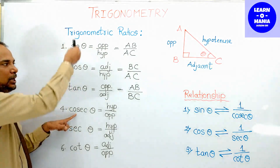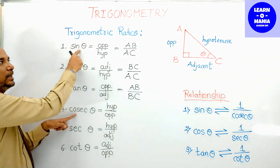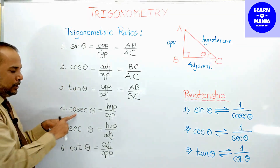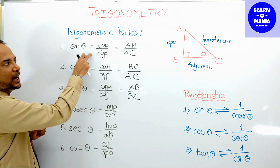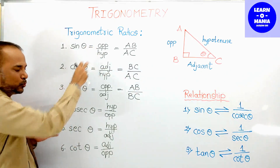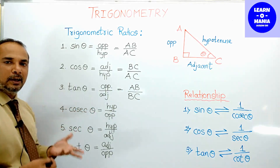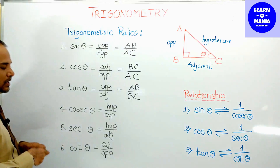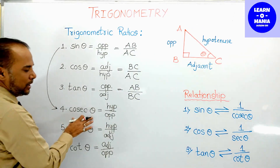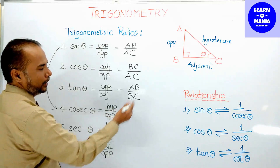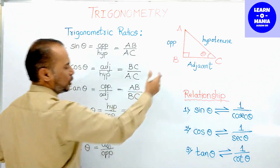Now if you understood the first three, the next ones are easy. Cosec theta is exactly the inverse of sin theta. Cosec theta is hypotenuse upon opposite — the inverse of sin, which was opposite upon hypotenuse. As per this figure, cosec theta equals AC upon AB.